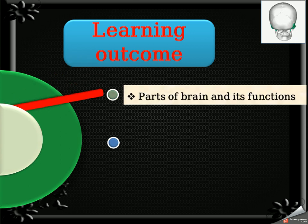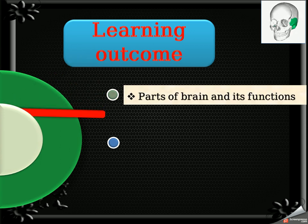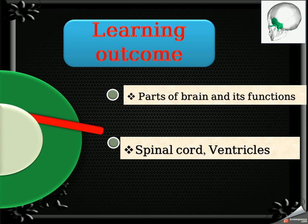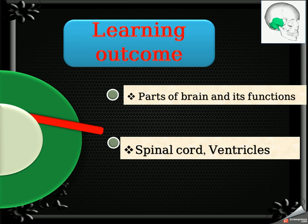The learning outcomes today are: parts of the brain and their functions, then spinal cord, ventricles, and the meninges.